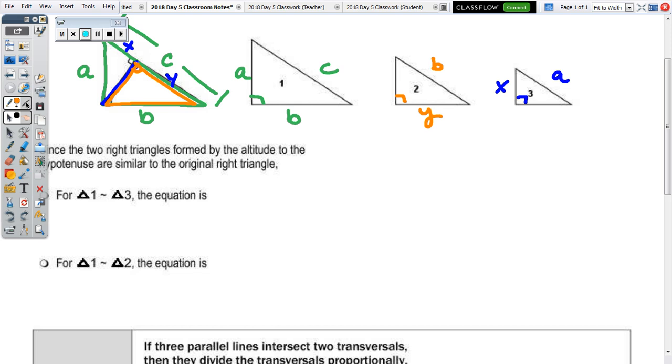So, down below, since the two right triangles formed by the altitude to the hypotenuse are similar to the original triangle, we're going to write the proportions in comparing triangle one to three. So, in comparing triangle three, so that's all the way to the smallest one, you're only given two sides, so I'm going to compare hypotenuse to leg, A to X. Going back to the largest one, number one, A to X would be equal to, right to left, C to A.